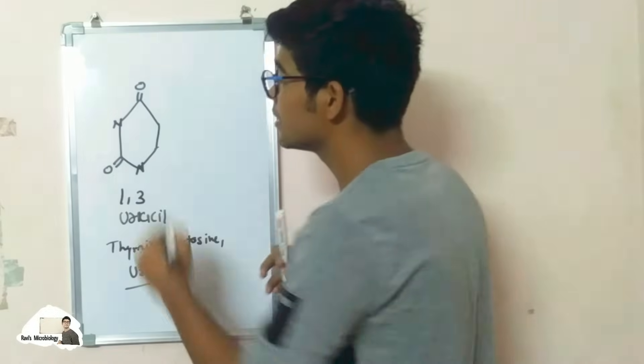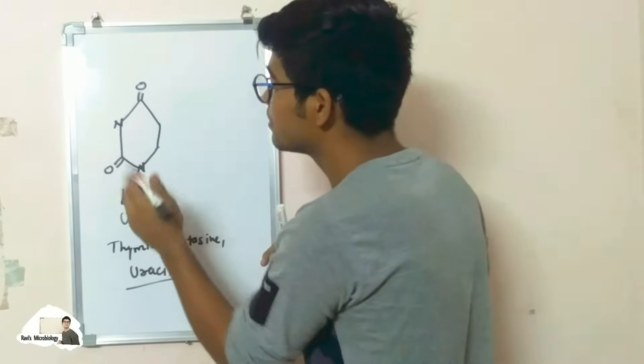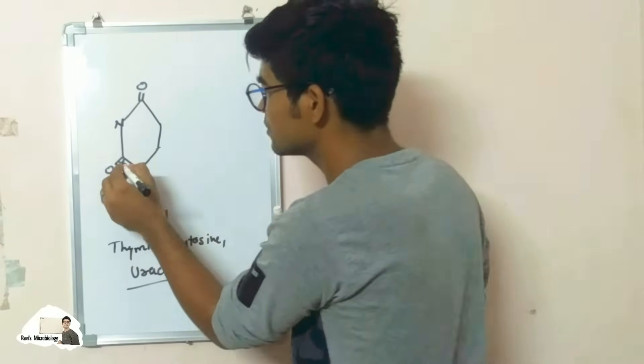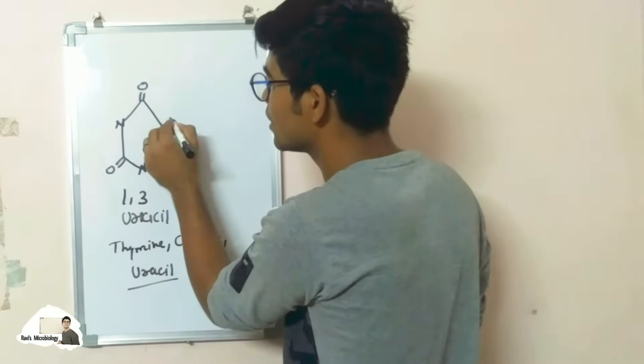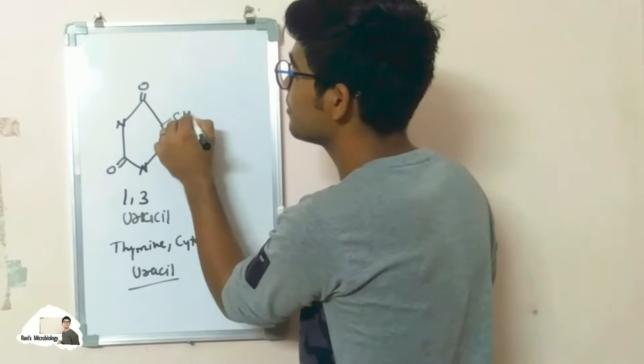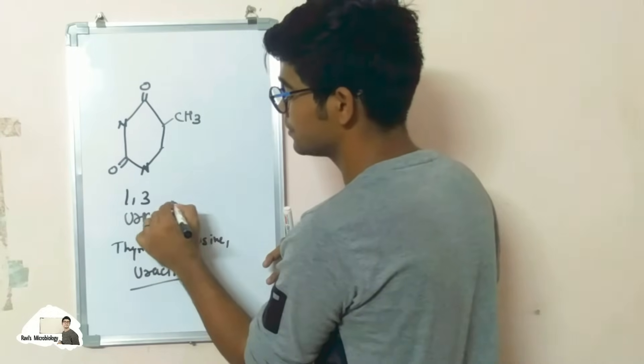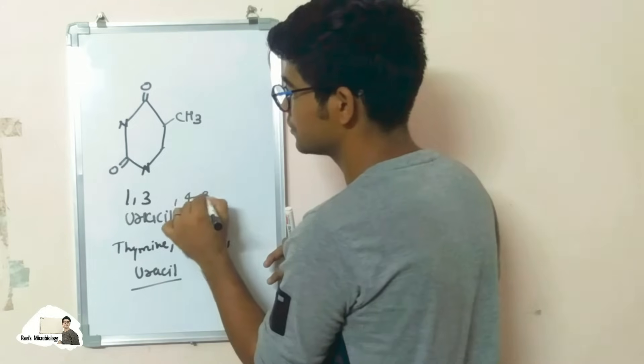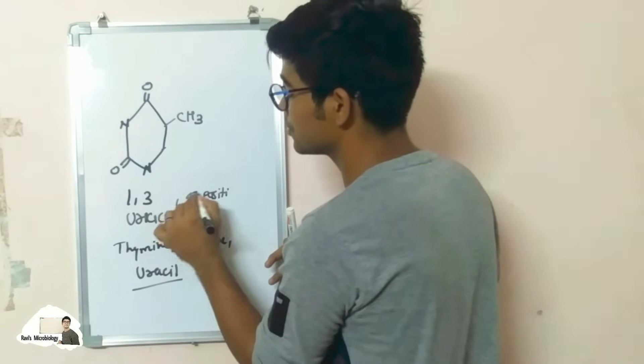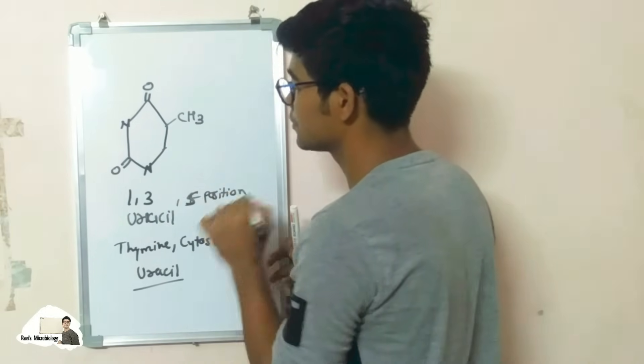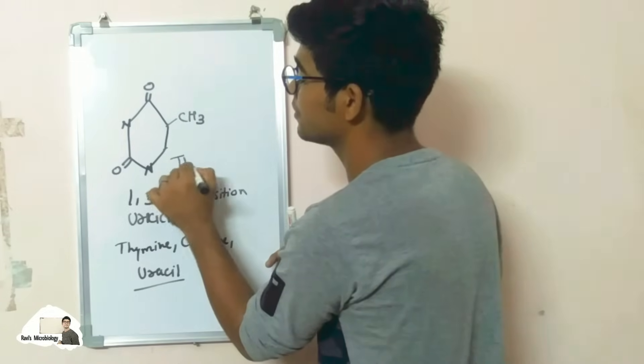And for thymine, same as uracil, but place a methyl group at five positions. So this is the fifth position. So it forms thymine.